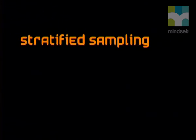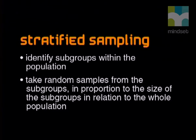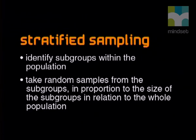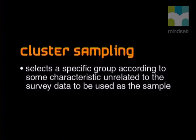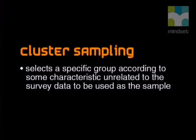The third method of sampling is called stratified sampling. This method looks at subgroups within the population. Random samples are then taken from the subgroups, but in proportion to the size of the subgroups in relation to the whole population. For example, say 20% of your customers are teenagers — break your sample population into teenagers and adults, randomly sample each group, and make sure that 20% of your sample comes from the teens and the other 80% from the adults. The fourth method is called cluster sampling. This method selects a specific group according to some characteristic unrelated to the survey data to be used as the sample.